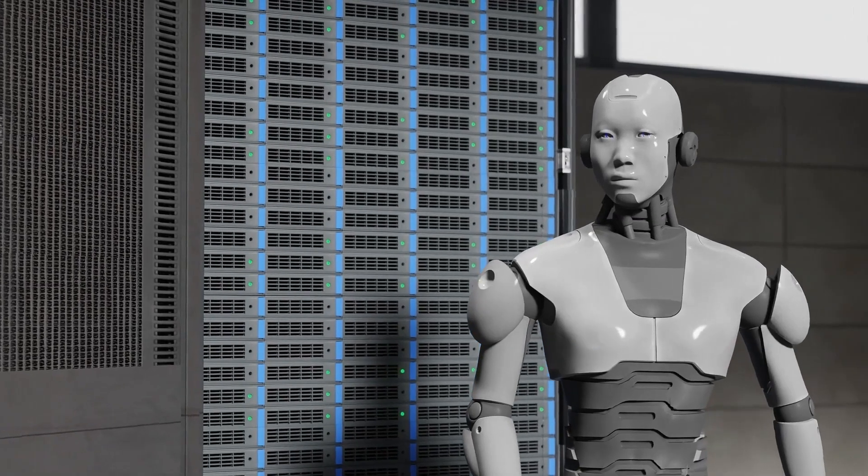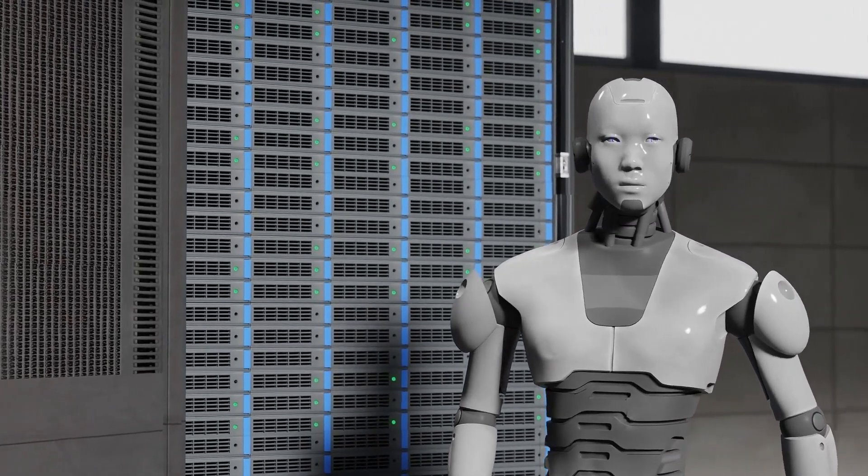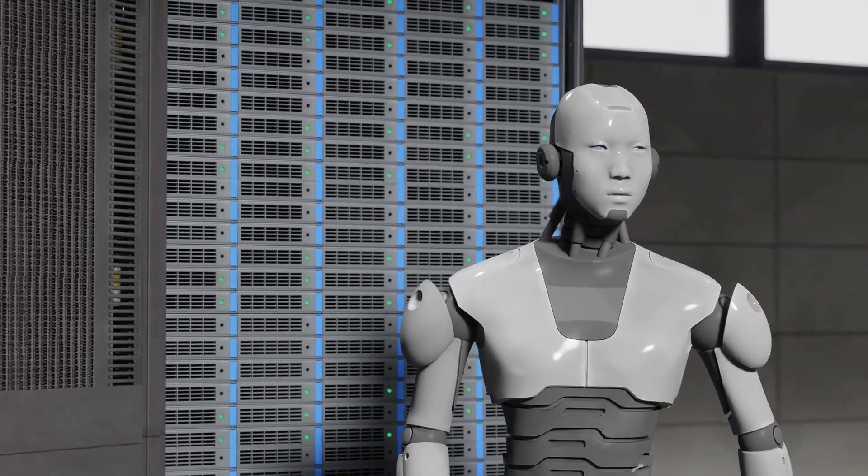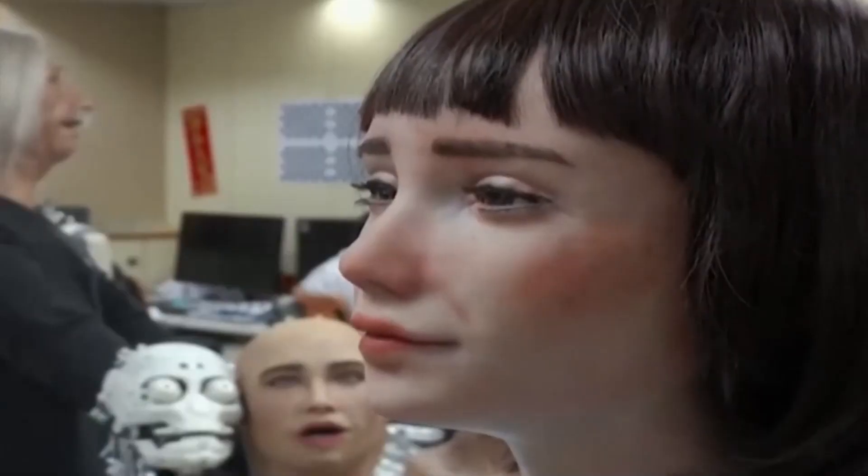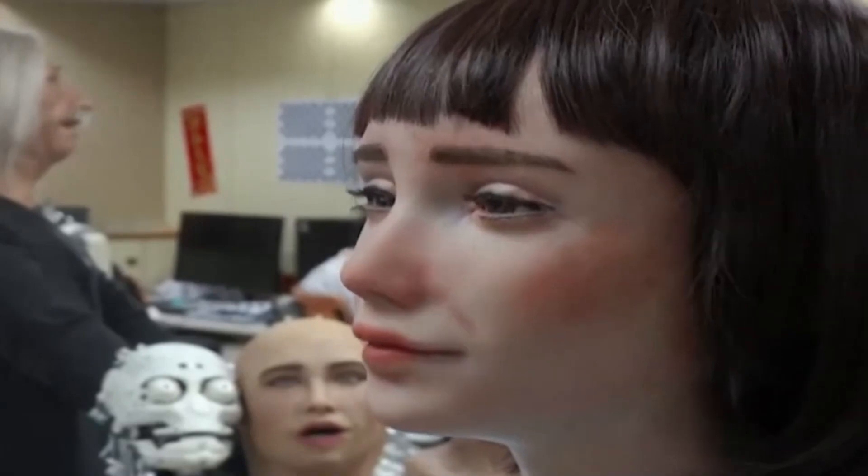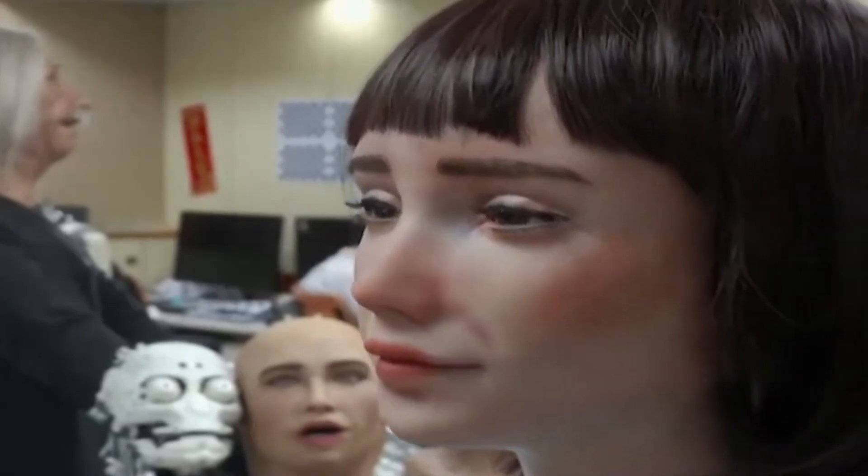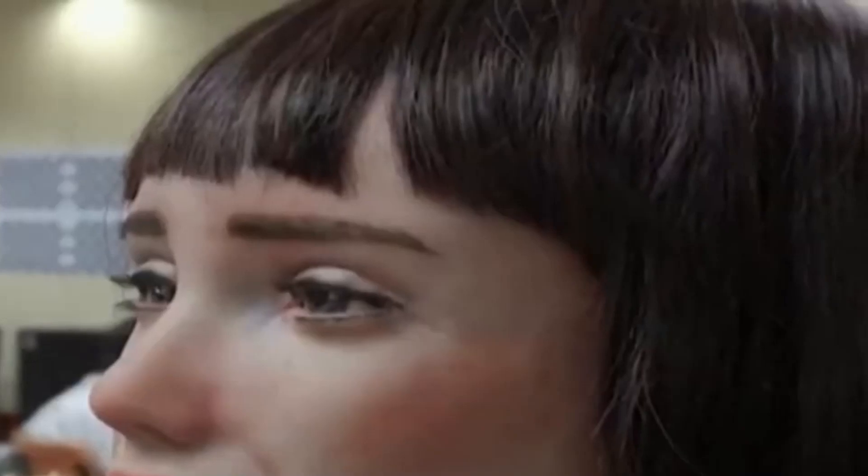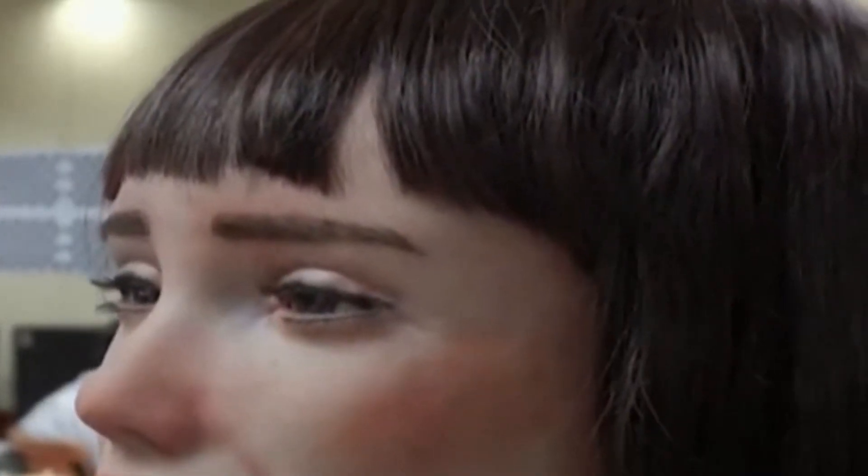Robots operate based on their programming. These algorithms are predefined by engineers, giving robots specific instructions on how to react to different situations. For example, if a robot is tasked with picking up an object, it follows a set of steps outlined in its code. These steps include identifying the object, calculating the best approach, and executing the movement.